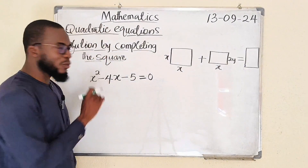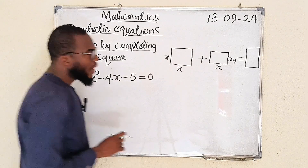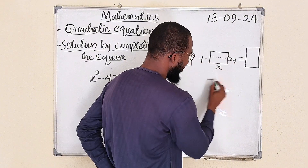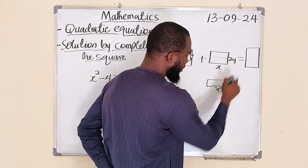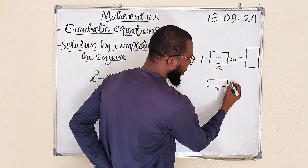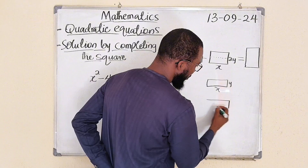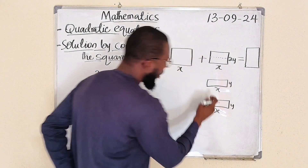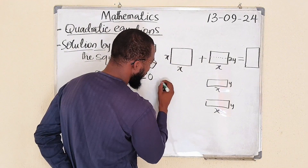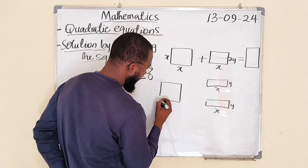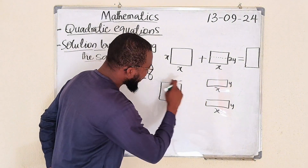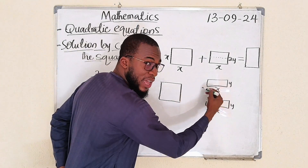I want to explain what this completing the square method is all about. I can partition this rectangle into two, dividing it so that we have two of them. This is x, and since I have cut it like this, this is 2y. Divide by 2 will be y here, and another one x by y. So I want to join these two to the square.